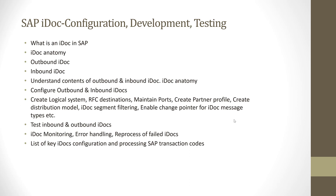Then we will look at the contents of inbound and outbound IDOCs. Next comes the configuration and development part, where we will go through various steps required to set up IDOC in an SAP system. Key steps include setting up a logical system, RFC destination, maintaining ports, creating a partner profile in SAP, creating a distribution model, setting up IDOC segment filtering, change pointer, message types, and more.